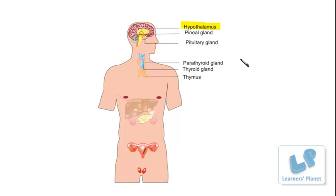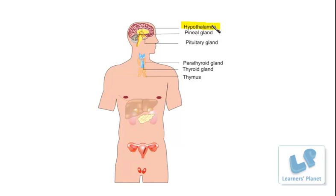These releasing hormones are very important because they control the function of the pituitary gland. The pituitary gland is known as the master gland of our body and secretes different hormones which either directly control and regulate various functions of our body, or control the functions of other glands. Even the secretion of the pituitary gland itself is controlled by the hypothalamus.